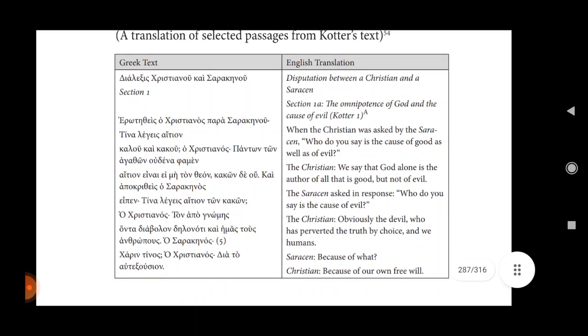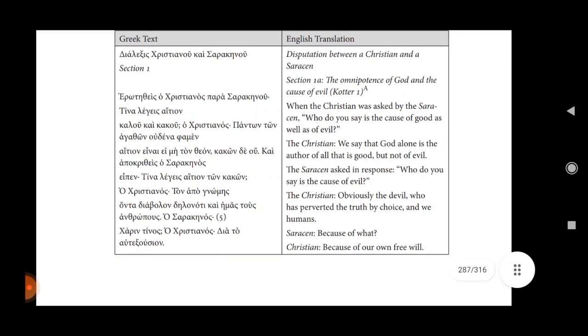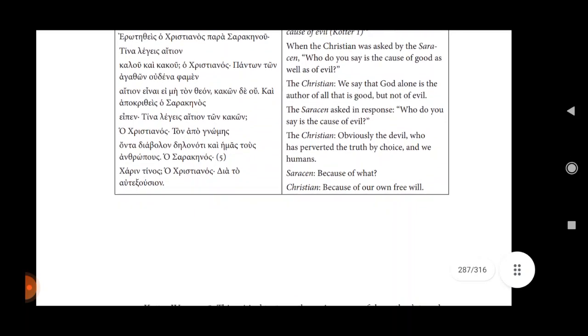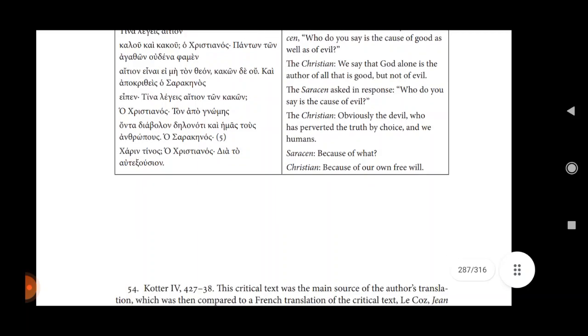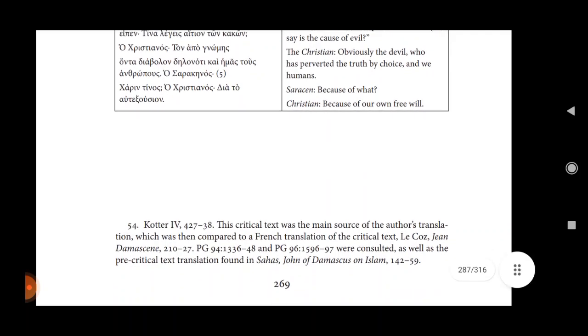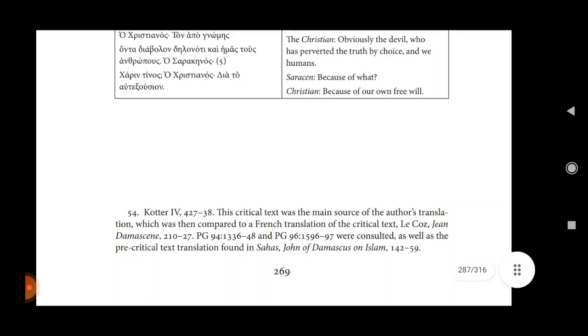The omnipotence of God and the cause of every Quotar one. When the Christian was asked by the Saracen, who do you say is the cause of good as well as of evil? The Christian said that God alone is the author of all that is good but not of evil. The Saracen asked in response, who do you say is the cause of evil? The Christian: Obviously the devil who has perverted the truth by choice and we humans because of our own free will.